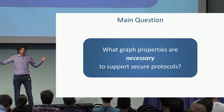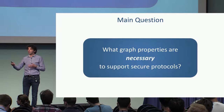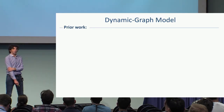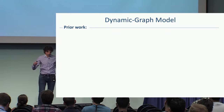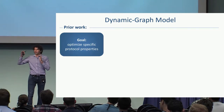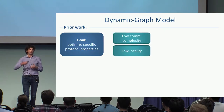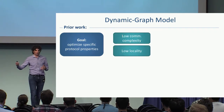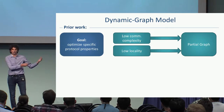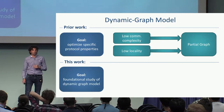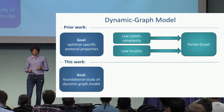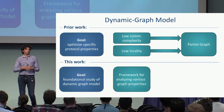The main question we have in mind is: what are the properties of the graph that are necessary for running a secure protocol? Prior works started with a protocol and asked what properties they wanted from it — for example, low communication complexity or low locality — and a partial graph was a side effect. In this work, we take a broader approach and conduct a foundational study of the dynamic graph model, with a framework to analyze various graph properties.